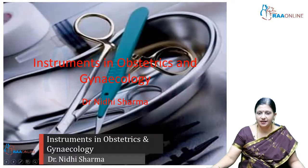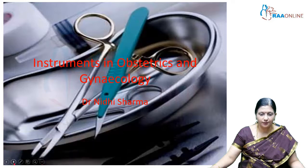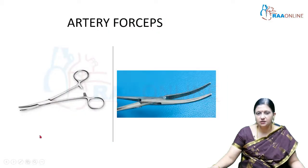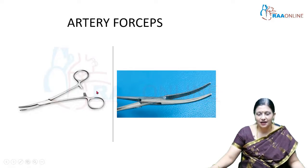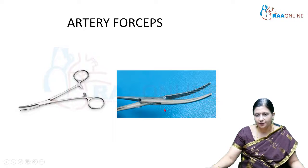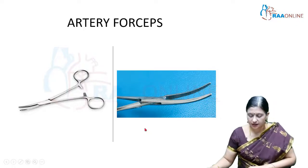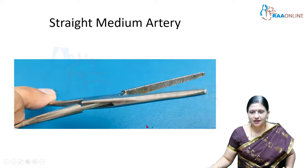Today's topic is instruments in obstetrics and gynecology, asked for five marks in all practical examinations. The first instrument is a curved artery forceps, which you can identify by the linear serrations inside it. It has a catch, clamp, and crush mechanism, and is used to catch bleeders and secure hemostasis.